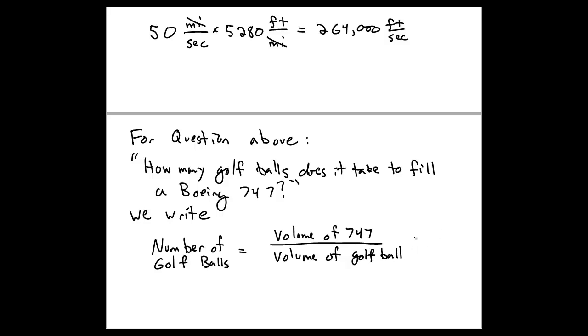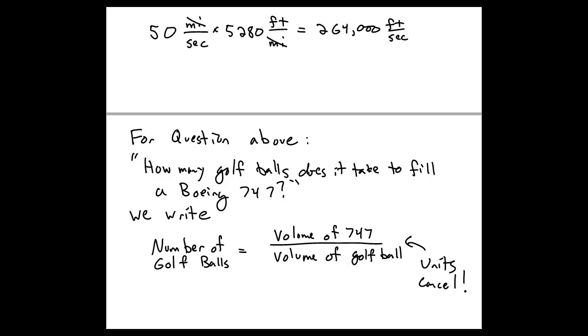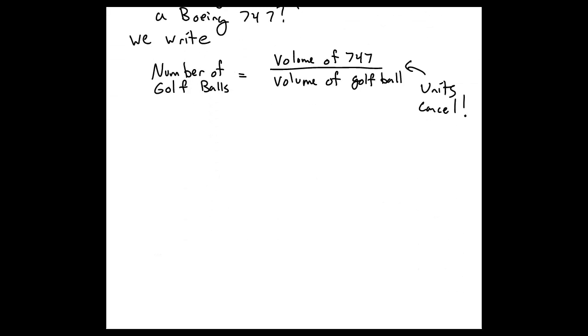Now clearly, in writing the expression like this, we see that the units will cancel out and the dimensions will cancel out, giving a pure number, the number of golf balls. This brings us to the next important skill, which is estimation.